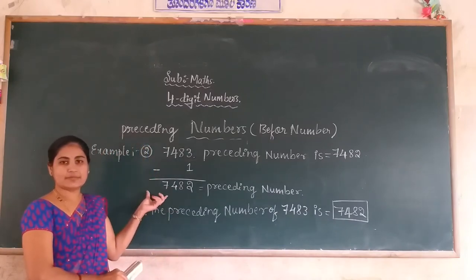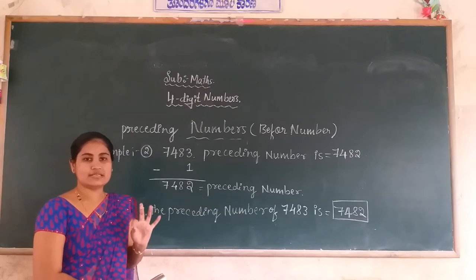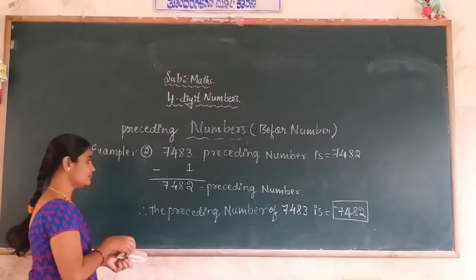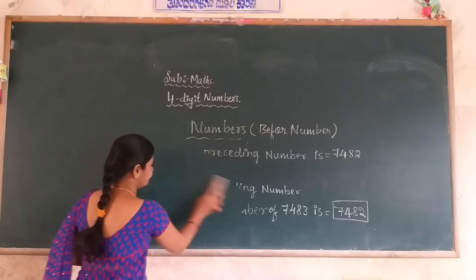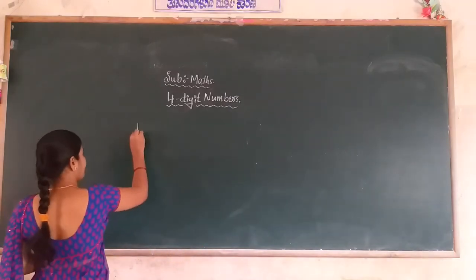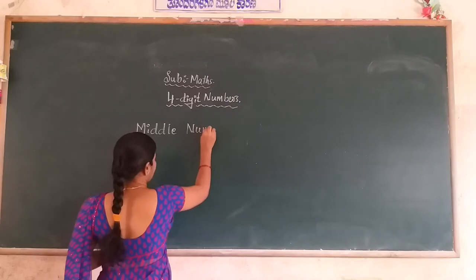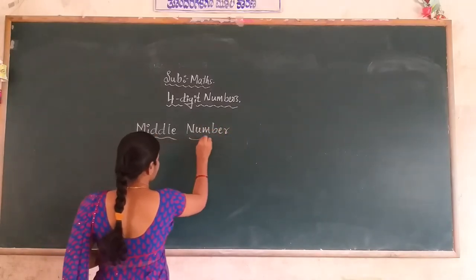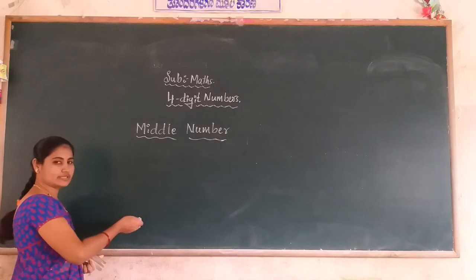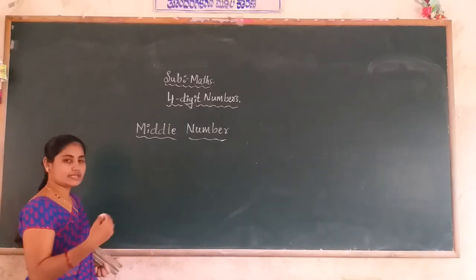This is the method for finding the preceding number of a given number. The succeeding number and preceding number are very important for your exam. Next: middle number. The middle number — you already learnt this in previous classes. The after number and before number are already given, and you find the number in between. That is the middle number of the given numbers.